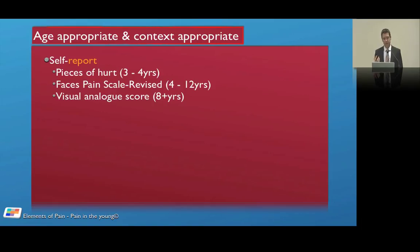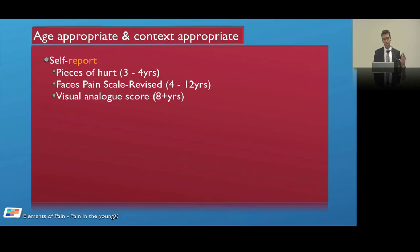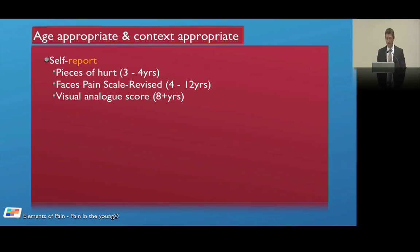For self-report, Pieces of Hurt uses poker chips — the more chips, the more hurt, used for three-to-four-year-olds. The Faces Pain Scale Revised is useful for four to twelve years old; it initially used the Wong-Baker faces scale which was cartoon-like, but the revised versions are gender-neutral and now preferred over the older ones. Visual analog scores can be useful in children aged eight and above.